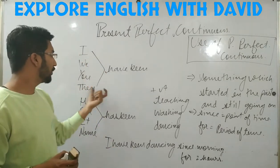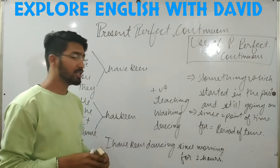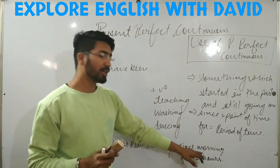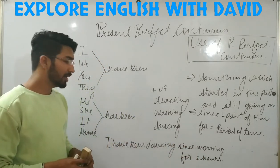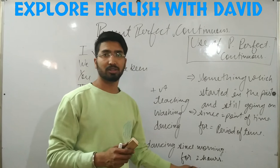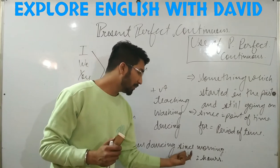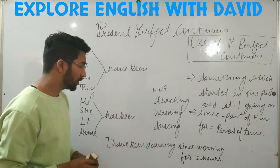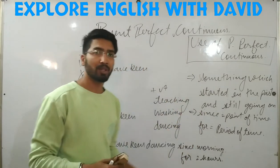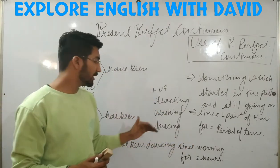We use 'have been' for plural subjects and 'has been' for singular subjects, followed by the fourth form of the verb. For example: I have been dancing since morning. I have been dancing since morning. Or: I have been dancing for 2 hours — here I am using 'for' to indicate the length and duration.